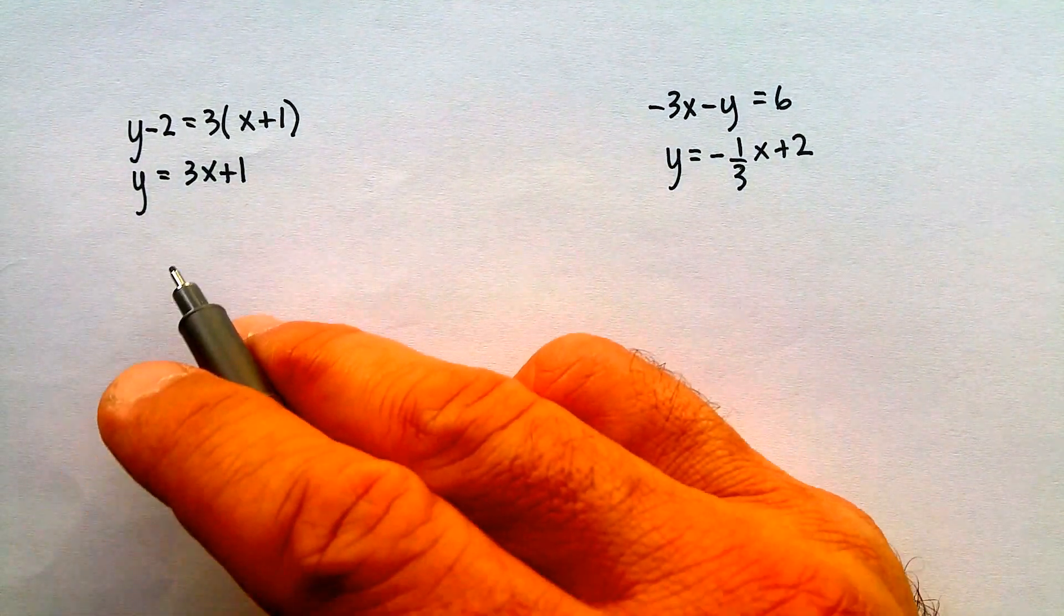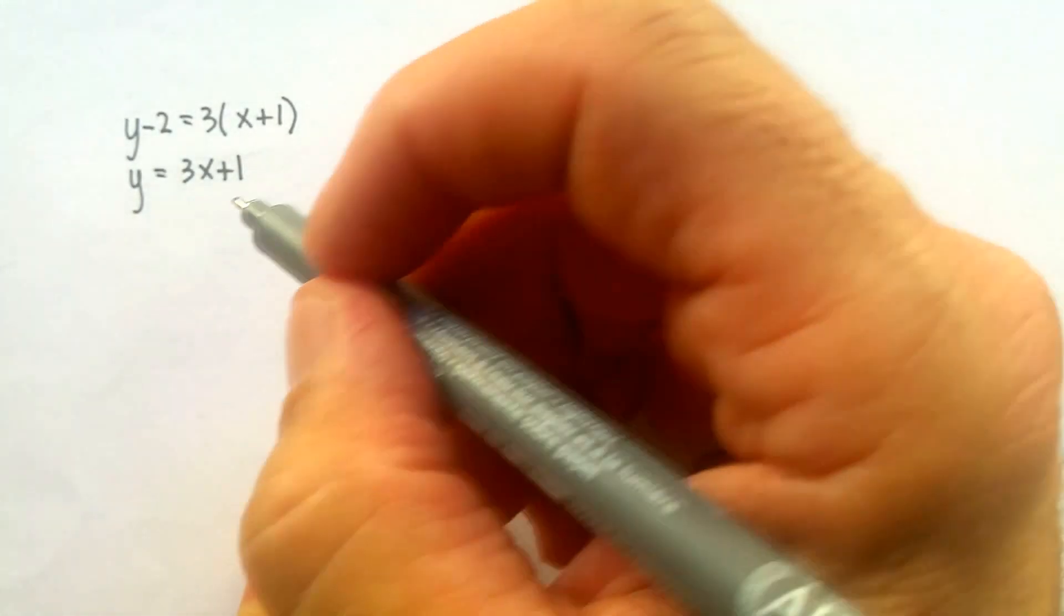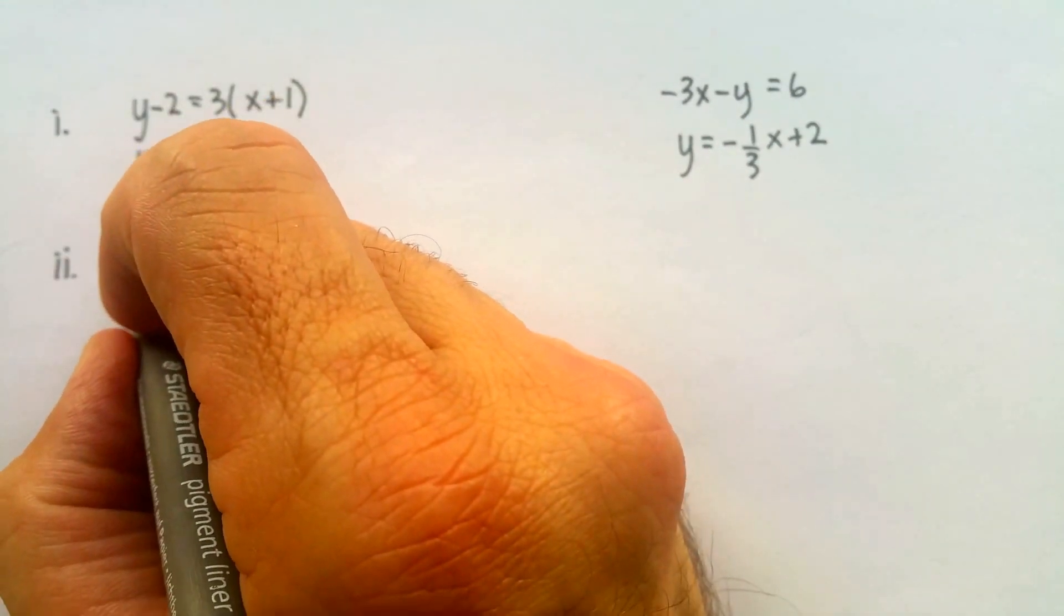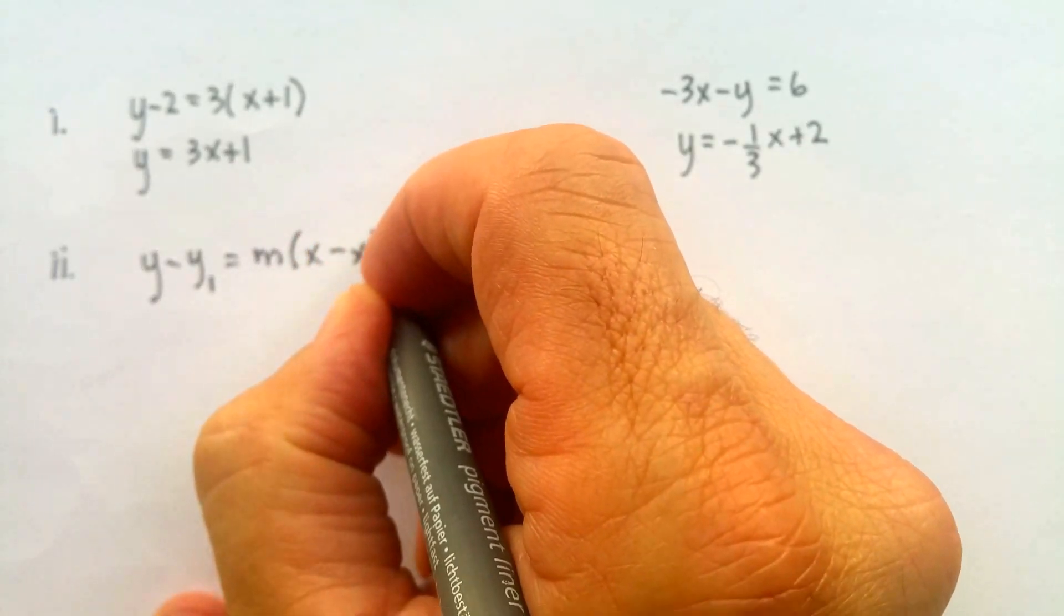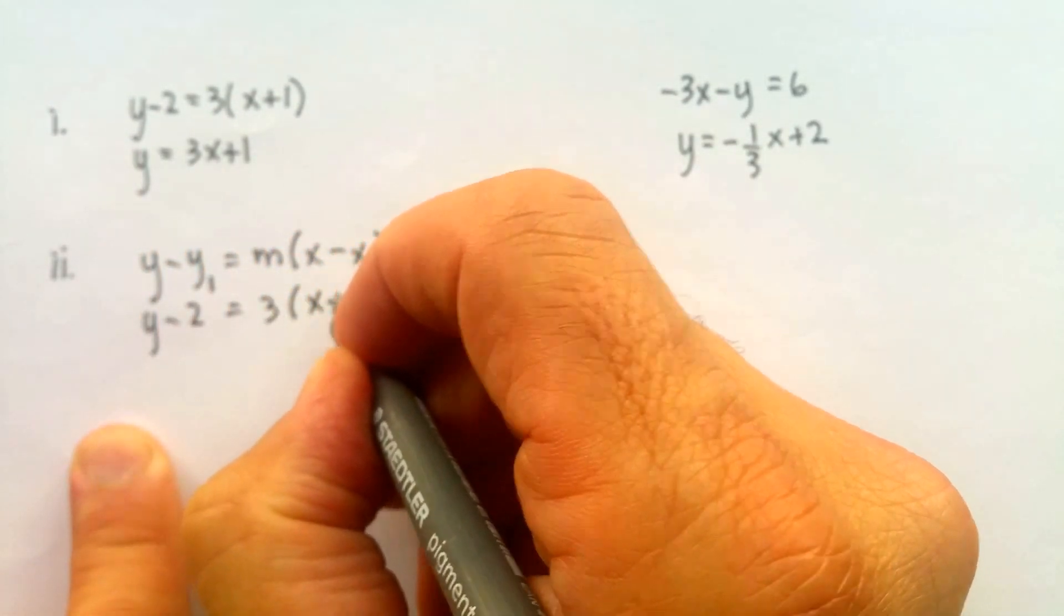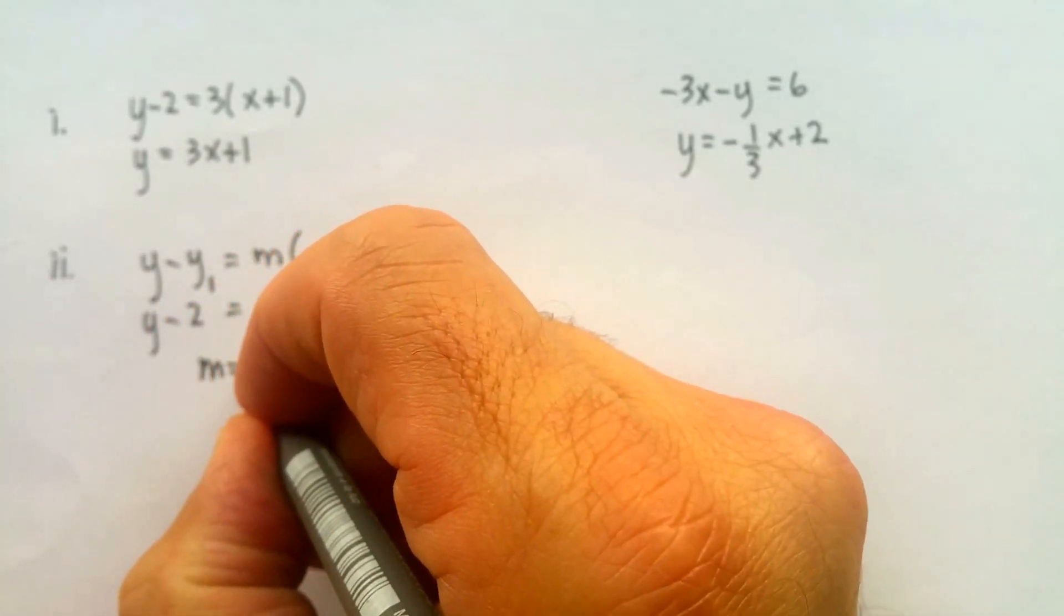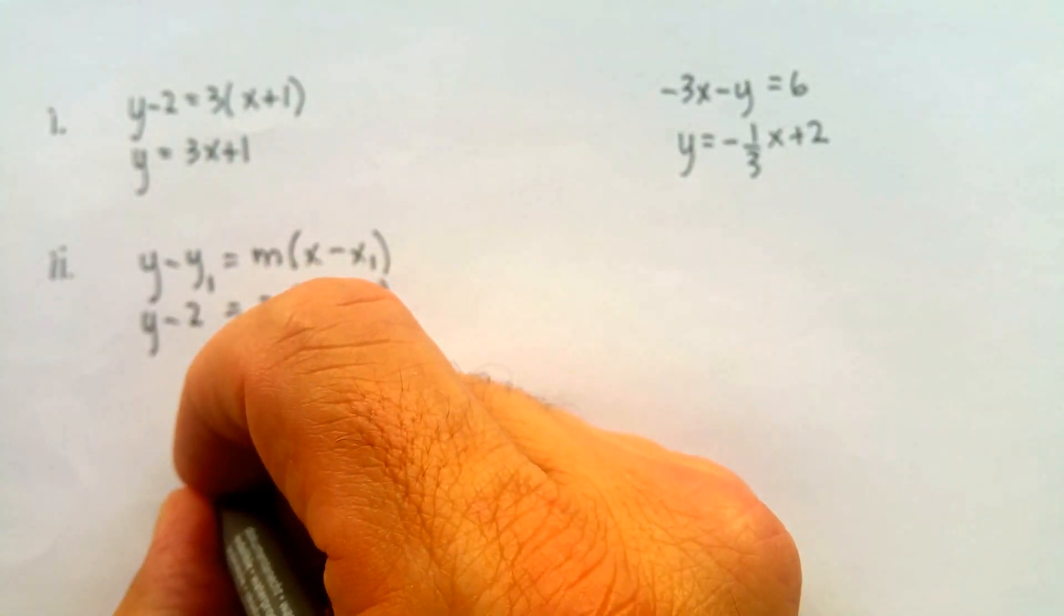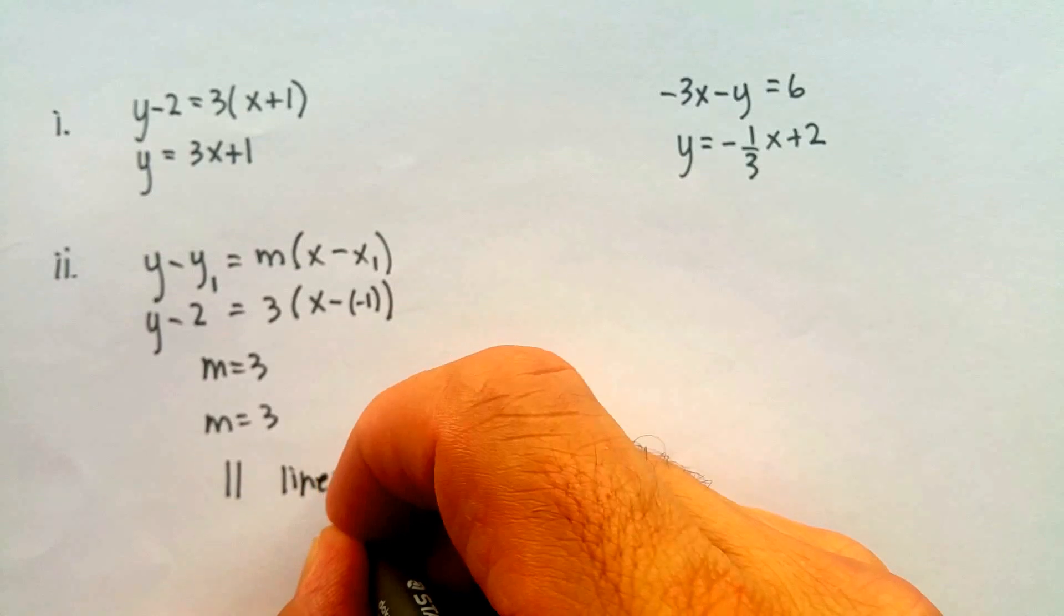Now, in this example here to the left, this is in a form of the equation called the point-slope form. And the point-slope form looks like this: y minus y1 is equal to m times x minus x1. And you'll see that this equation follows that form exactly. And I can just say minus negative 1. That would be the same thing as plus. So the slope in this equation is just 3. The slope in this equation is just 3, because again, this is y equals mx plus b. So if we have the slope is 3 in the top one, slope is 3 in the bottom one, we'd say these lines are parallel lines.